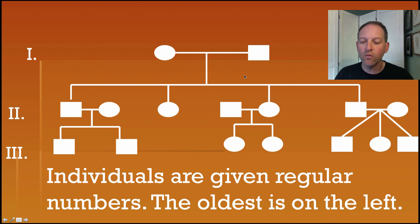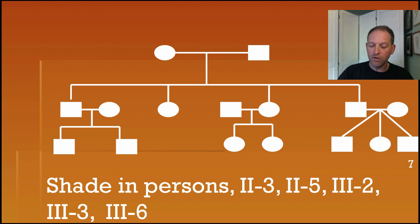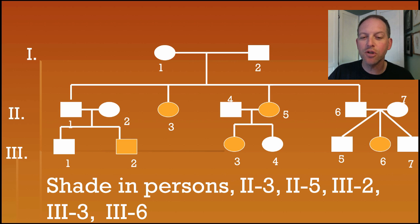Then, individuals are given regular numbers. The oldest is on the left. So, each generation will number one, two, and then we'll start over the next generation. And you should be doing this on your sheet. And so on. Now, I want you to shade in persons 2-3, 2-5, 3-2, 3-3, and 3-6.